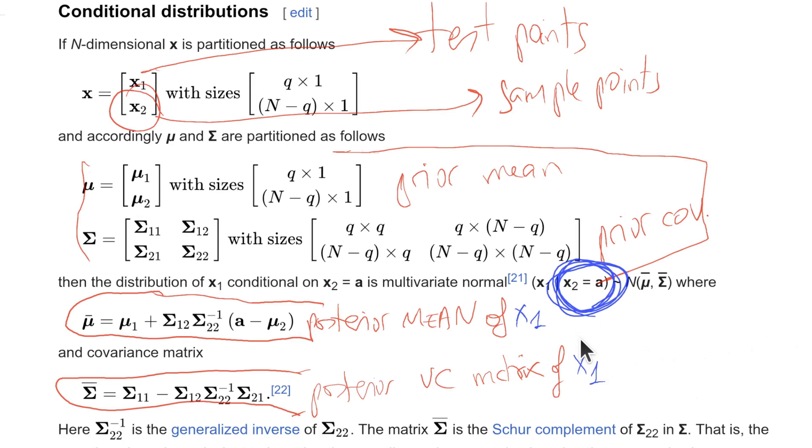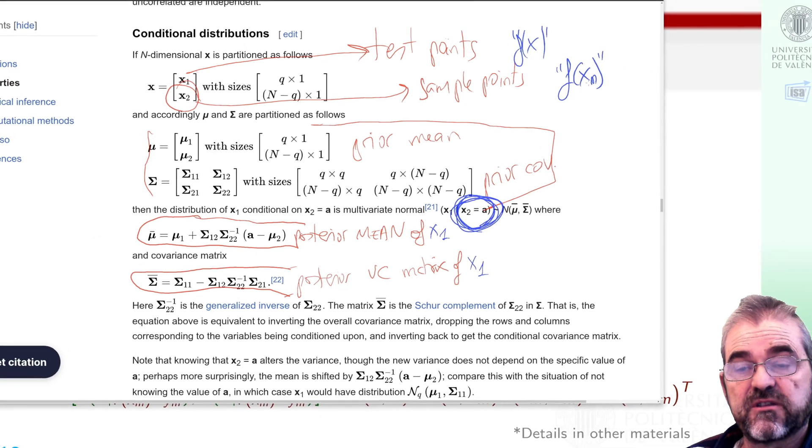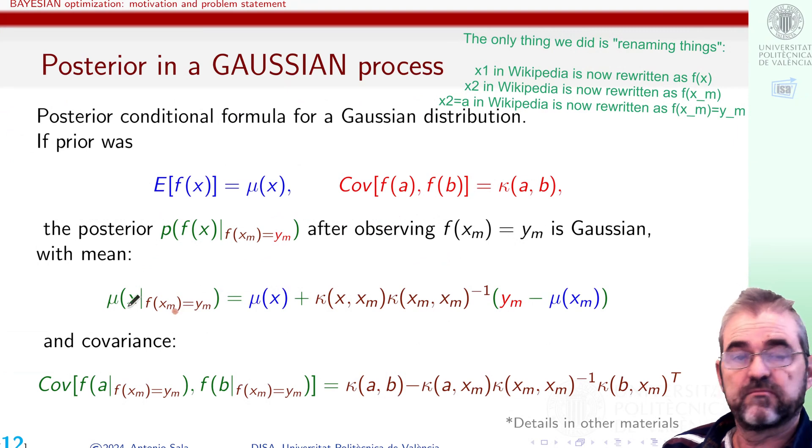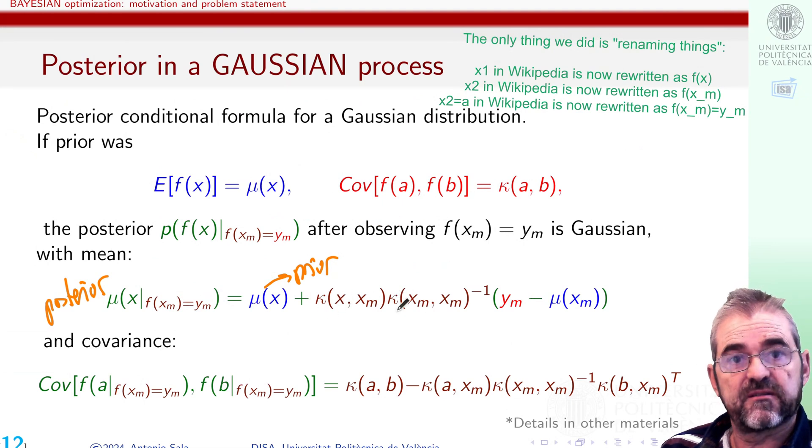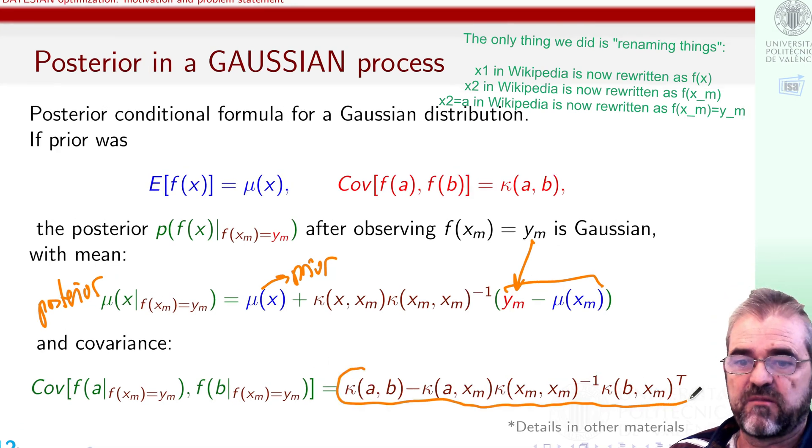If we now call my test points, I wish to obtain the value of random variable f(x) for a given x, and my sample points, I observed the value of my random variable f(xm) measured points. Just copying and pasting the same formulae but changing notation gives me this posterior mean: my prior mean plus covariance times inverse of the information variance times the innovation measurement minus the mean value.